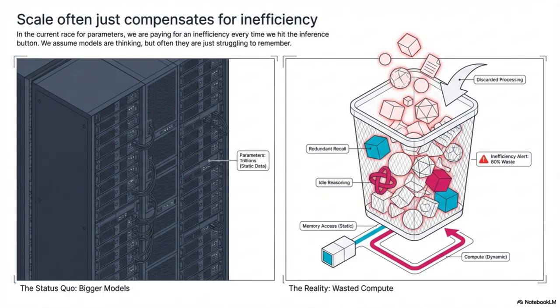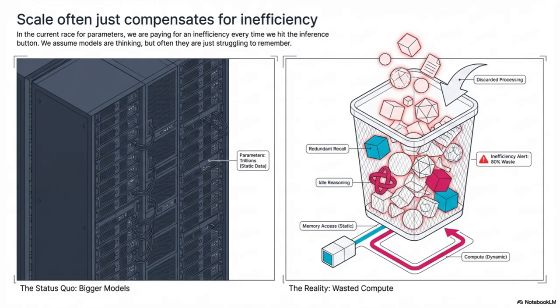Our mission today is to give you the lens to understand this new primitive — conditional memory — which treats recall as its own separate sparse thing. This is your shortcut to understanding why the race for raw parameter count might be winding down, and the race for architectural efficiency is really just getting started.